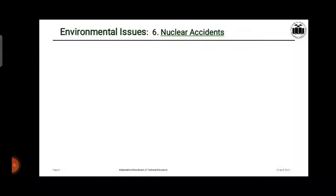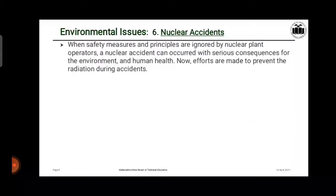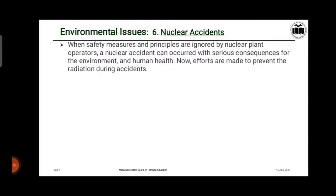The next environmental issue is nuclear accident. A nuclear accident is observed when safety measures and principles are ignored by nuclear plant operators. If the operator ignores safety and the different principles regarding nuclear objects, then we will observe a nuclear accident.